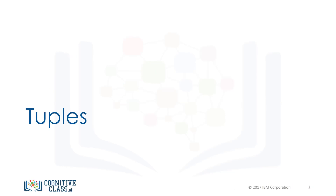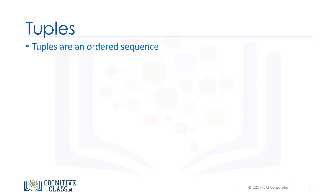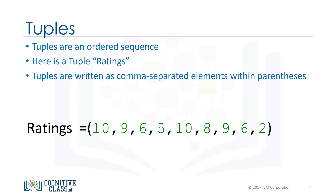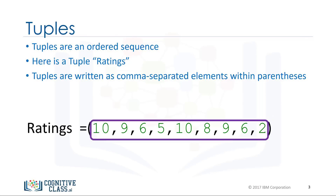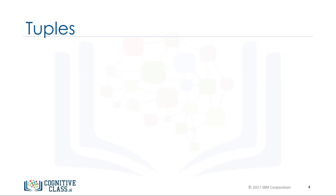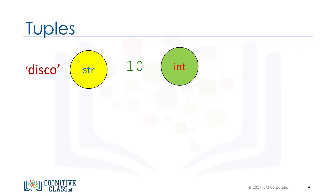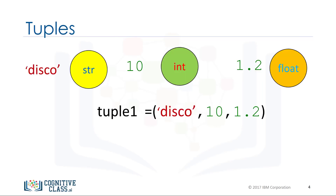Tuples are an ordered sequence. Here is a tuple called ratings. Tuples are expressed as comma separated elements within parentheses. In Python, there are different types — strings, integer, float — and they can all be contained in a tuple, but the type of the variable is tuple.